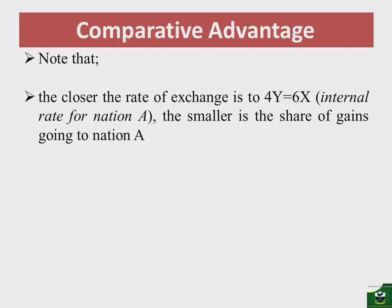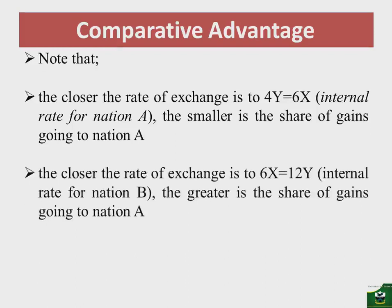If nation A exchanges 6X for 5Y, it gains 1Y. If nation A exchanges 6X for 6Y, it gains 2Y. And if nation A exchanges 6X for 12Y, it captures all the gains from trade, equal to 8. So the closer the rate is to 6X equal to 12Y, the greater the earnings or gains accruing to nation A.